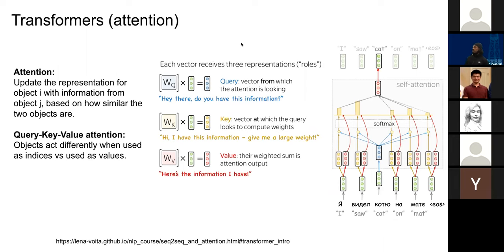So QKV attention allows words to act in three different senses: as queries, as keys, and as values. The GLOM architecture gets rid of this QKV attention and replaces it with a different intuition on how we might formulate this, but it's useful to know this for comparison.